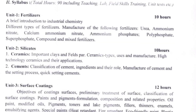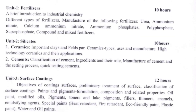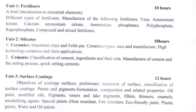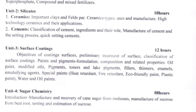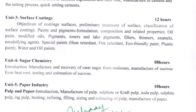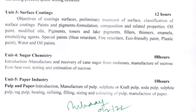6C paper — Industrial Chemistry 1 — has five units: Unit 1 Fertilizers, Unit 2 Silicates, Unit 3 Surface Coatings, Unit 4 Sugar Chemistry, and Unit 5 Paper Industries.